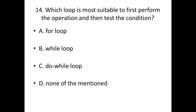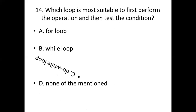Fourteenth bit: Which loop is more suitable to first perform the operation and then test the condition? Option A: for loop. Option B: while loop. Option C: do while loop. Option D: none of the mentioned. Answer: Option C, do while loop.